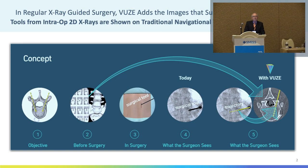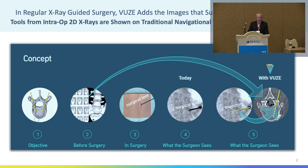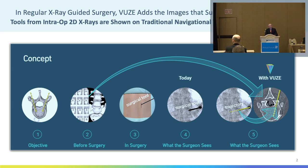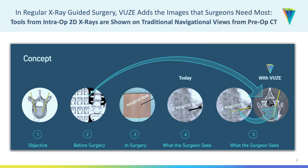The concept is to provide, during x-ray-guided surgery, the images that surgeons need most and currently do not have with x-ray: namely the traditional navigational views — axial and sagittal cross-sections. We do that by, each time a new x-ray is acquired, automatically detecting the surgical tools. Just standard tools — they need not be modified in any way, shape, or form. They have no sensors, trackers, markers, references. It's just image processing.